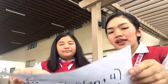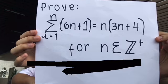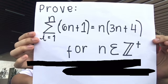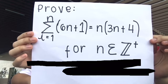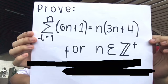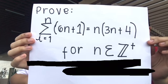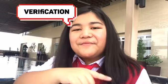Now, we have an example, and that is to prove that summation of 6n plus 1 from i equals 1 to the nth term is equal to n quantity 3n plus 4, for n is an element of positive integers.